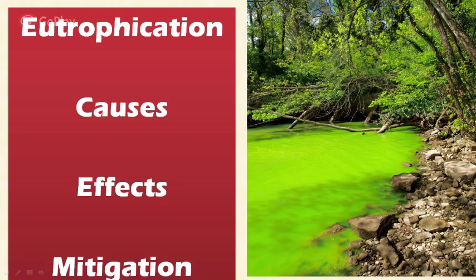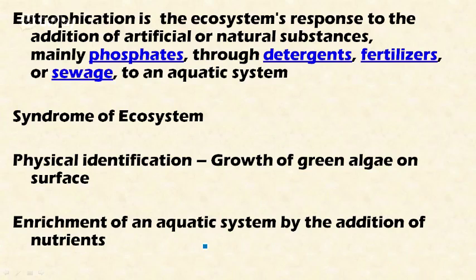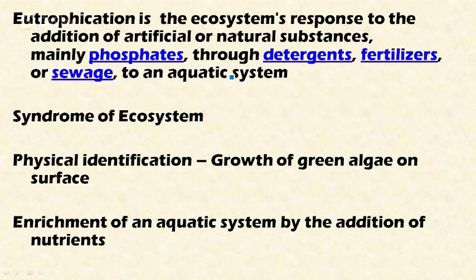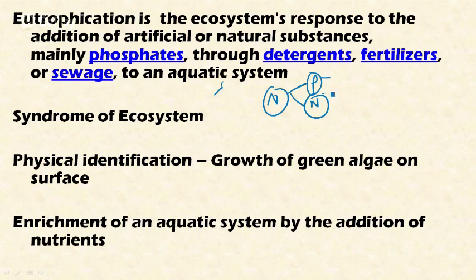Welcome friends. In this video, let's discuss eutrophication: what are the causes, what are the effects, and how do you mitigate this phenomenon. First, the definition — eutrophication is the ecosystem's response to the addition of artificial or natural substances, mainly phosphates and nitrates, through detergents, fertilizers, or sewage, into an aquatic ecosystem.